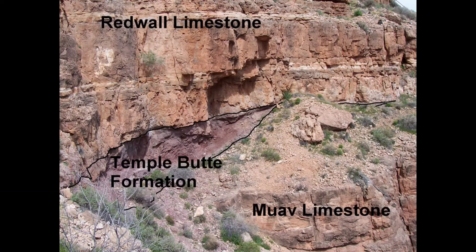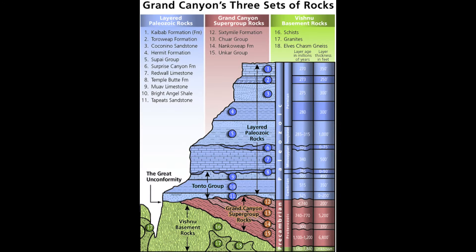In some places, we can see many different types of sedimentary rocks stacked on top of each other. For example, the Grand Canyon has layers of limestone, sandstone, and shale. Some layers are quite thick, which can be because the process that made them was going on for a long time.